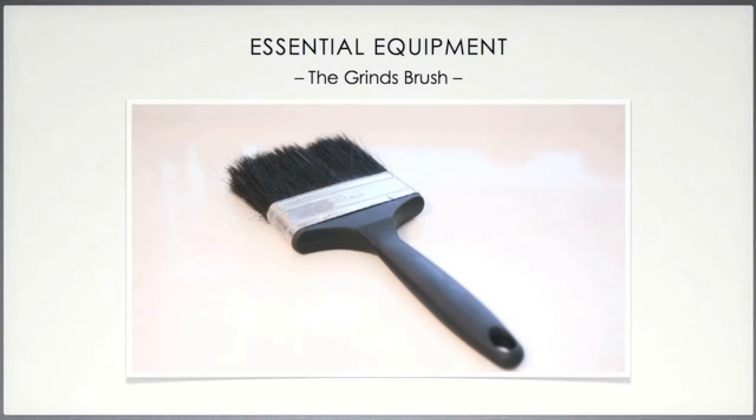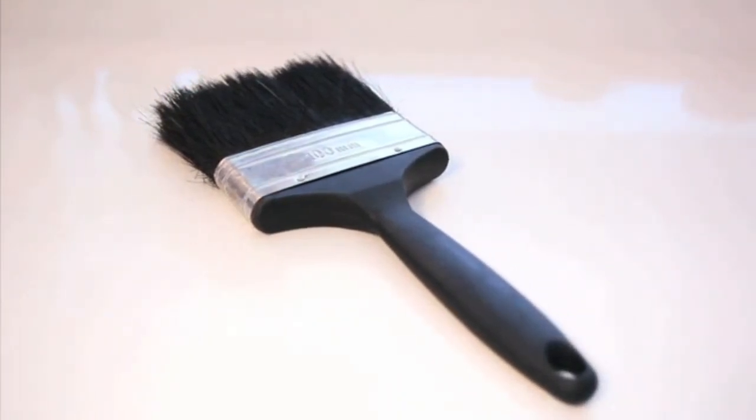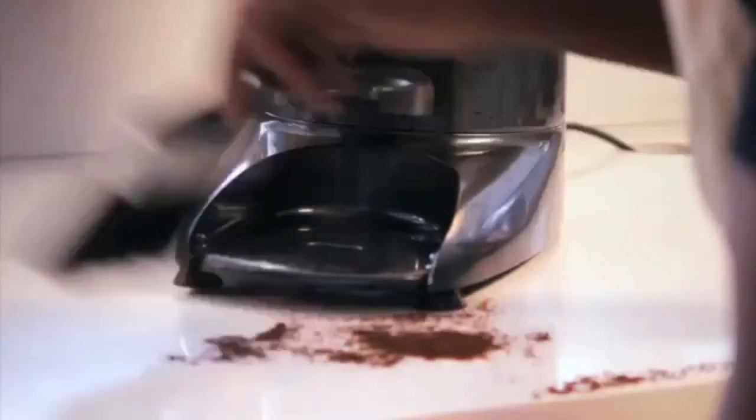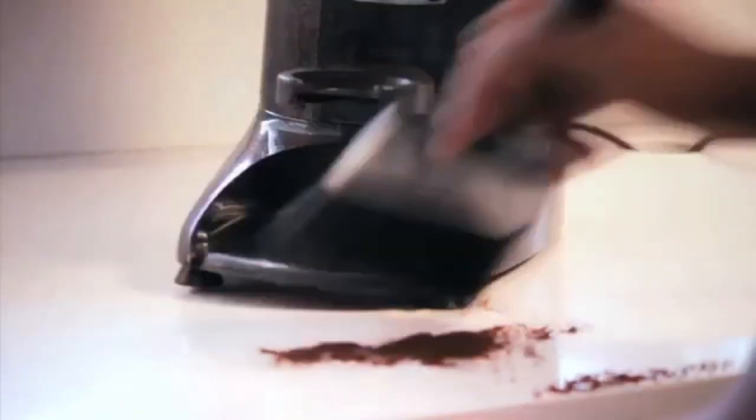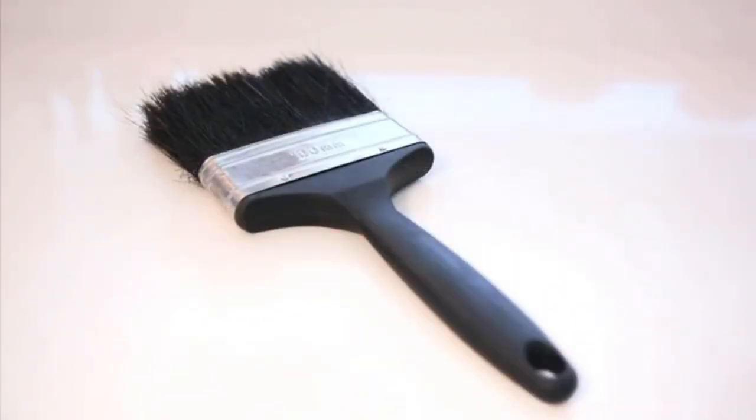The grinds brush: this is often a natural bristle brush with a wooden or plastic handle. This brush is used to clean the grinder, the counter, and the loose grounds around or under the equipment. This ensures that no places go untouched and that all debris is collected and thrown away immediately, ensuring that your coffee station always remains spotless.